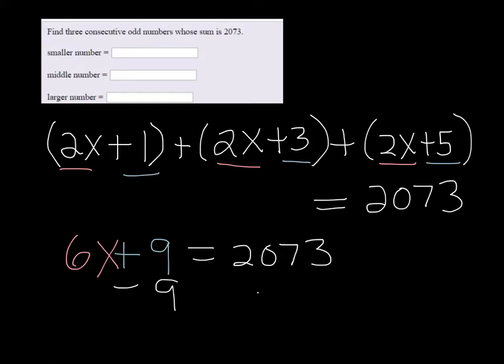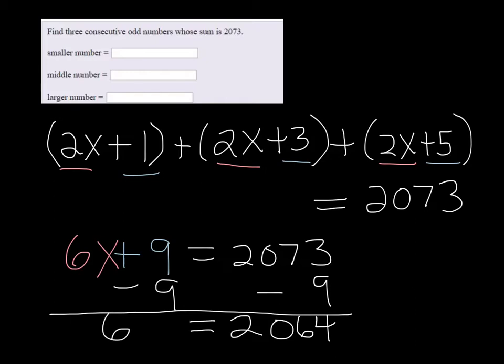If we subtract the 9 on both sides, we get 2064 is equal to 6x, and then divide both sides by 6, which you are allowed to use the calculator, so feel free to do that. 2064 divided by 6 is 344.